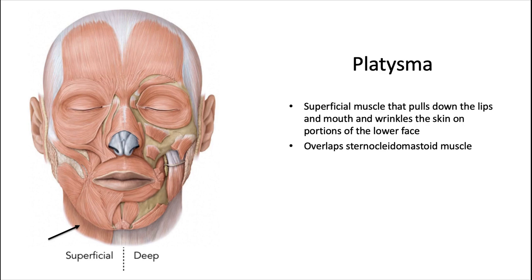The platysma muscle is a superficial muscle that pulls down the lips and the mouth and wrinkles the skin on portions of the lower face. It's a bit confusing because the bulk of it is located on the neck, but it's considered a muscle of facial expression — not a neck muscle — and is thus innervated by cranial nerve 7. It's wrapped in its own superficial fascia and overlaps the sternocleidomastoid muscle.